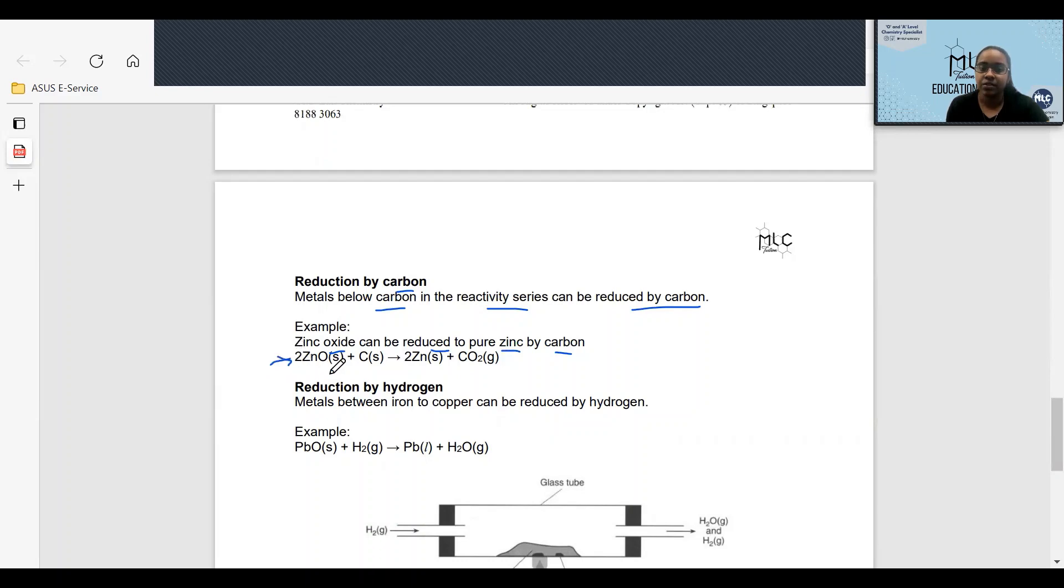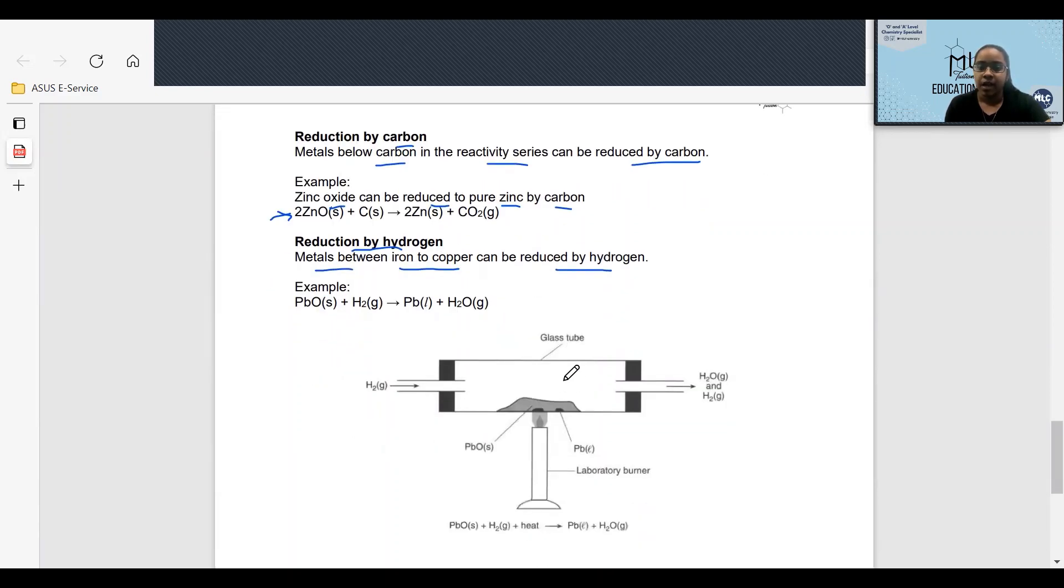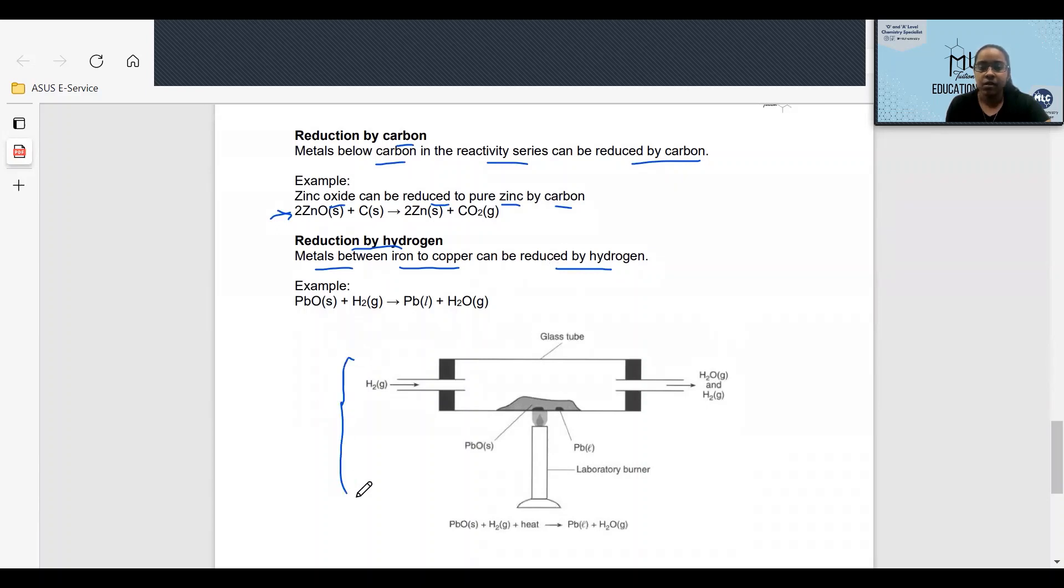The last method of extraction is reduction by hydrogen, where metals between iron and copper can be reduced by hydrogen, as shown in this setup over here, where we have lead oxide reacting with hydrogen gas to produce lead and water.